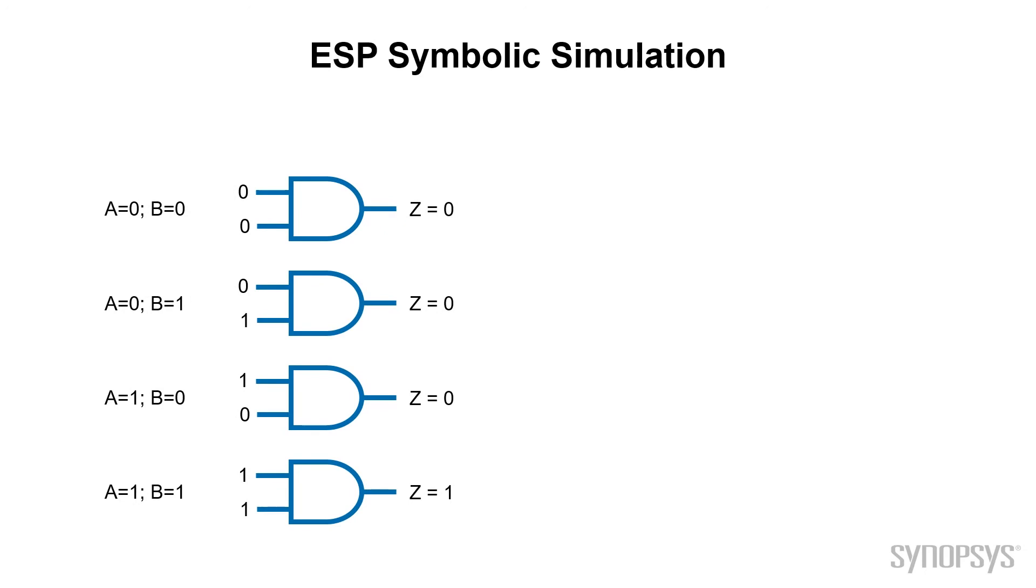Now let's consider how to do the same verification with a symbolic simulator. We will apply symbols instead of logic 1 or 0. Let's set A to S1 and B to S2 and run the simulation. Now the output is S1 and S2. Looks very much like the AND function we expected.